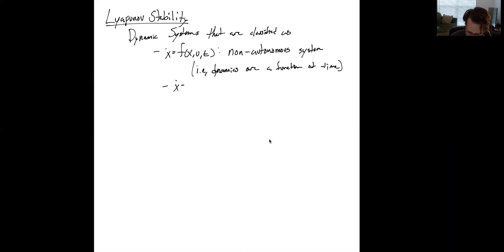Then we could have the case where we just have x and u and no t. So we're going to call this an autonomous system, namely the dynamics are not a function of time. So this is the difference between time varying and time invariant systems.